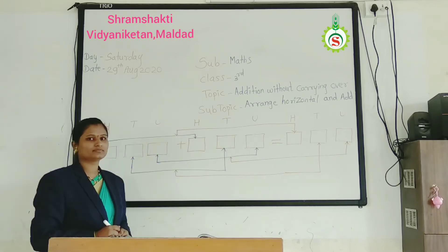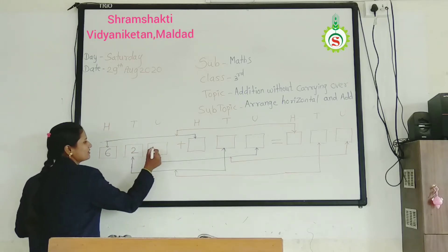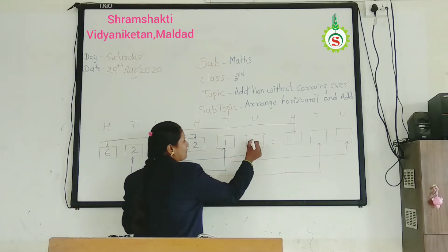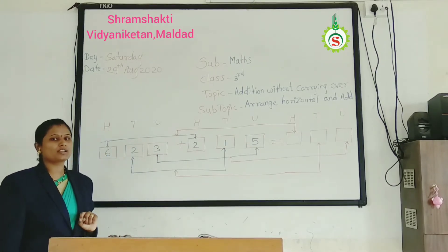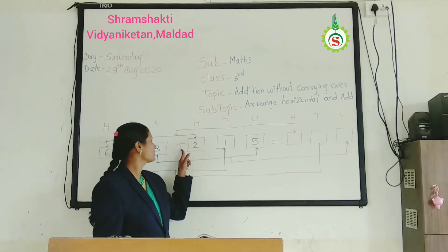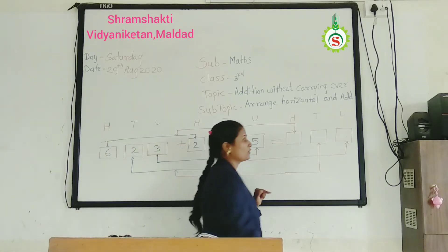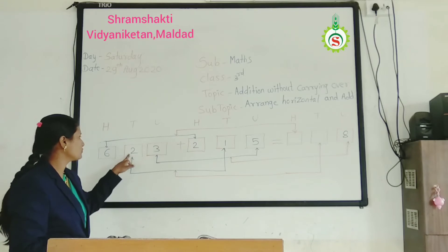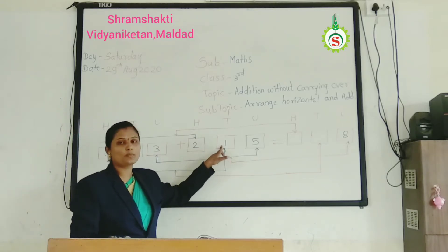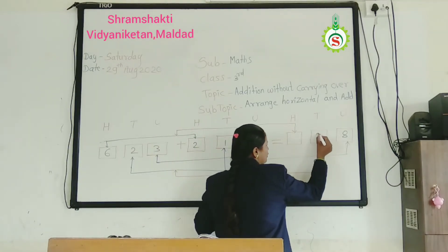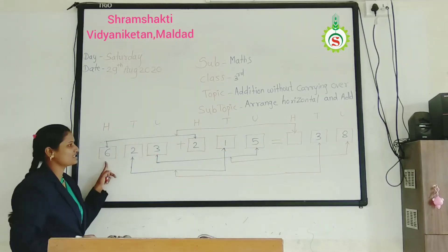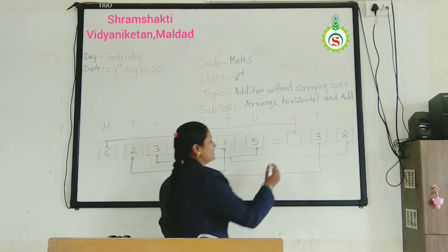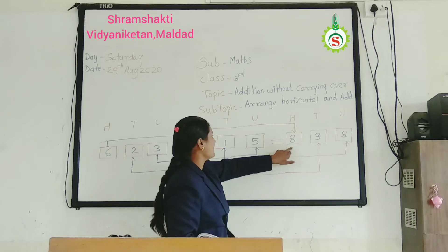Which is the next sum? 600, 2 tens, 3 units. Add 200, 1 ten, 5 units. Then you see which column? Unit column: 3 plus 5 is 8. Write down at unit column. Then you see next, which column? Tens column: 2 plus 1 is 3. Write down at tens column. Then 6 plus 2 is 8. Write down at 100s column. We get 838.